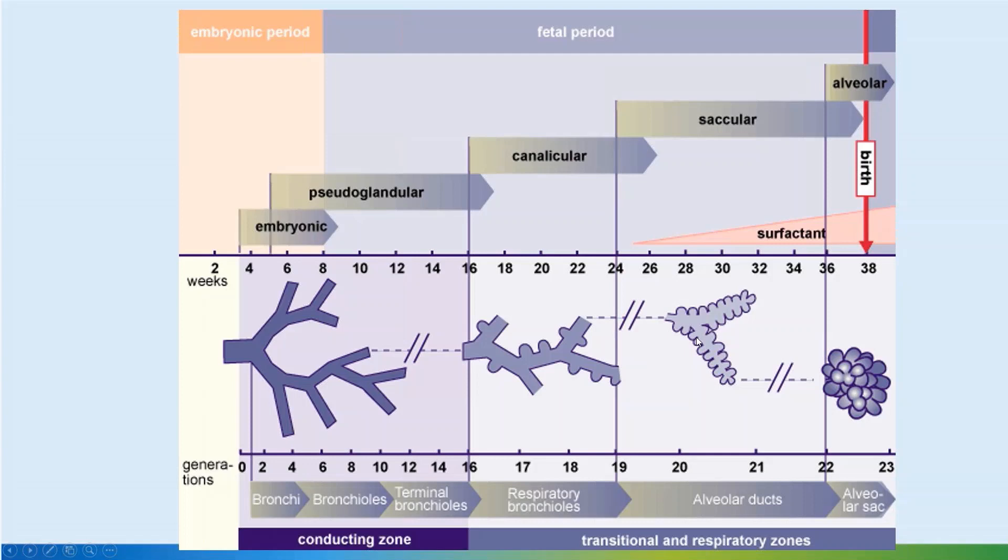The respiratory bronchioles and the saccules are formed from 22-23 weeks onwards, and then the alveoli start being formed around 28 weeks onwards.